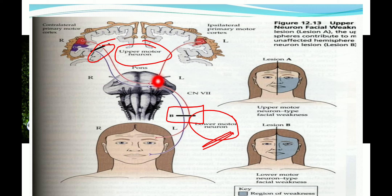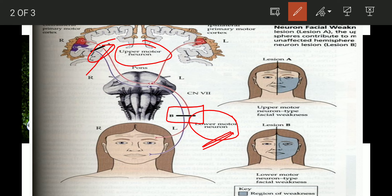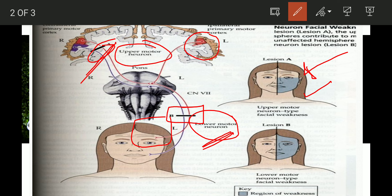What is happening here is that the ipsilateral primary motor cortex has also innervated the upper half. So if there is a lesion in the upper motor neuron, this part is still getting input from the ipsilateral primary motor cortex — so the upper half will be basically spared. In upper motor neuron lesion the upper half is spared, but the lower half of the face is affected.